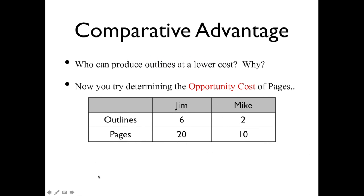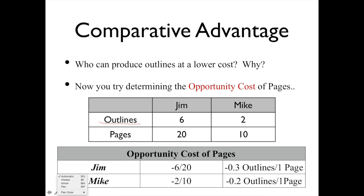To determine the opportunity cost of pages, we look at how many outlines we're going to give up. Jim gives up six outlines to get 20 pages, while Mike gives up two outlines to get 10 pages. Reducing it down to one page: Jim gives up 0.3 outlines and Mike gives up 0.2 outlines. Here, Mike has the lower opportunity cost — he's only giving up 0.2 outlines, so he should focus on making pages. It costs him less.